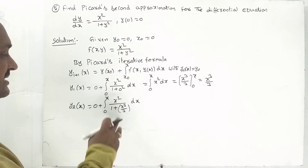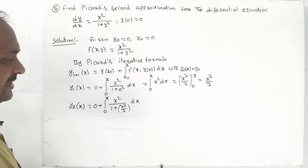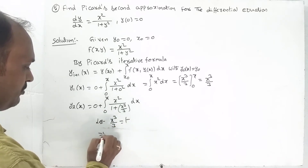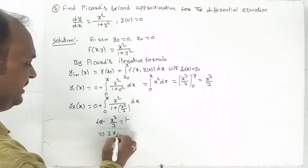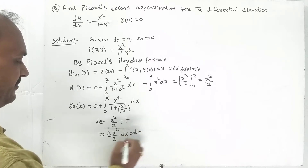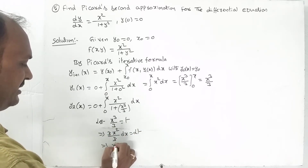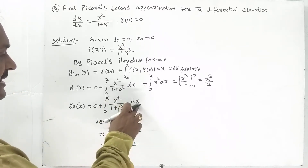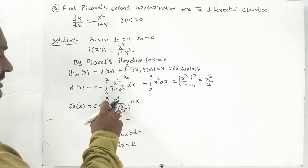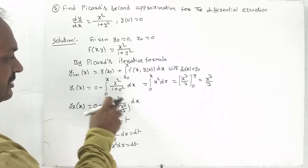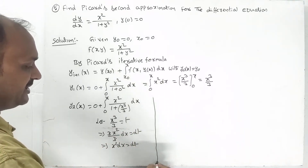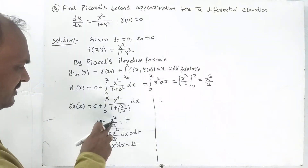Now we need to integrate. Let t equal x cubed by 3, so dt equals x squared dx — the 3s cancel. So x squared dx equals dt, and substituting t for x cubed by 3, the integral becomes dt by 1 plus t squared. Because limits are 0 to x: when x equals 0, t equals 0.